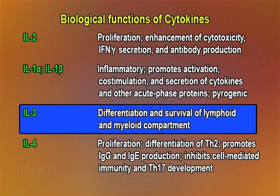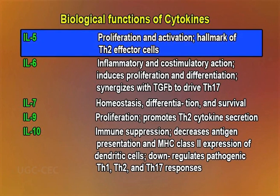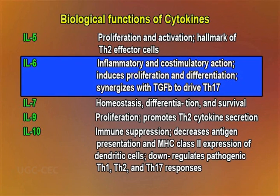Interleukin 3 is involved in differentiation and survival of lymphoid and myeloid compartments. Interleukin 4 is involved in proliferation and differentiation of TH2 cells, promotes immunoglobulin G and immunoglobulin E production, and inhibits cell-mediated immunity and TH17 development. Interleukin 5 is involved in proliferation and activation, a hallmark of TH2 effector cells. Interleukin 6 is involved in inflammatory and co-stimulatory action, induces proliferation and differentiation, and synergizes with TGF-beta to drive TH17.